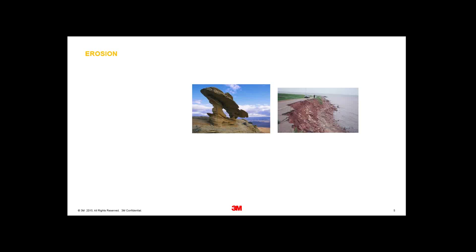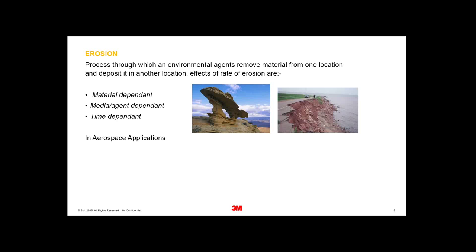Let's have a look at erosion. The dictionary definition is a process by which an environmental agent removes material from one location and deposits it to another. We've all seen instances of coastal erosion, particularly in the UK, and we know from geography that longshore drift deposits eroded sand further up the coast. Erosion is dependent on the material being eroded — harder materials are more difficult to wear away — the media or agent doing the eroding, and obviously tougher, harder grits and more acidic chemicals do more damage. It's also time-dependent.